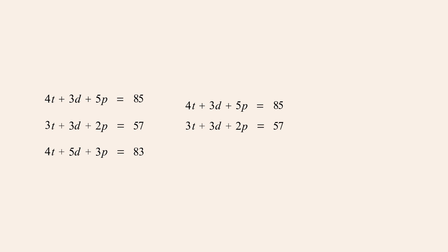To eliminate d, we first multiply the second equation by negative one and then add the equations. This gives us the equation t plus 3p equals 28.